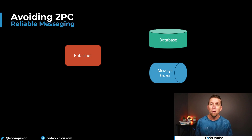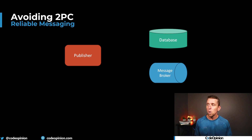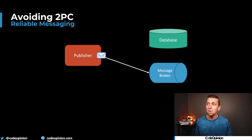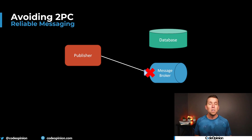The listen-to-yourself pattern is trying to solve this problem. When we make some type of state change to our database — let's say it's saving an order — we then need to publish an order placed event to our message broker so that other consumers can consume that message and do other things that are potentially part of workflows. The problem is we've saved our order to our database, but then maybe we fail to publish to our message broker. We don't have consistency. We need to guarantee that when we make that state change, we also publish the relevant events.